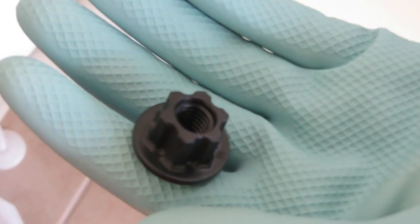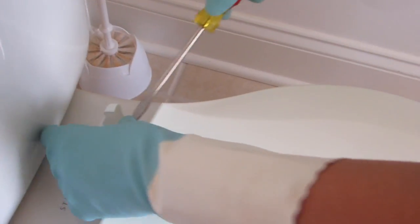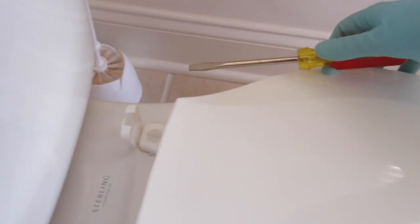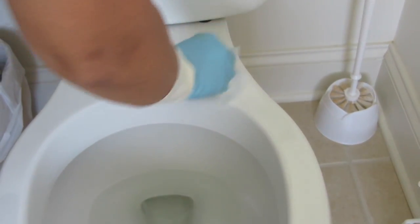So this is what it looks like when it's off. You're going to do the same thing to the other side of the toilet seat as well. Now I've already done the other side, so there you go. It easily comes off. This is your opportunity to clean.